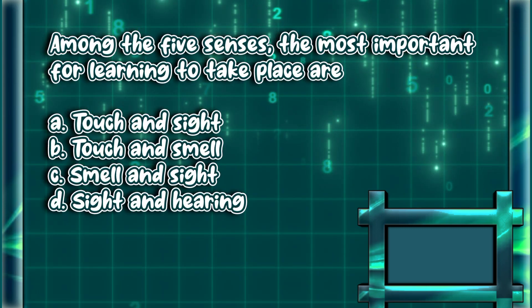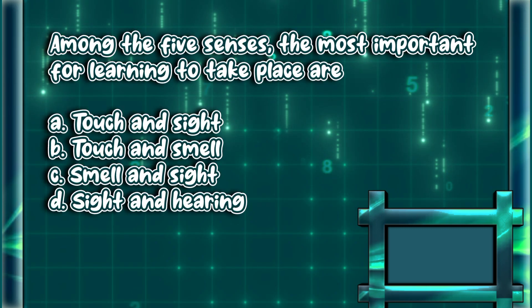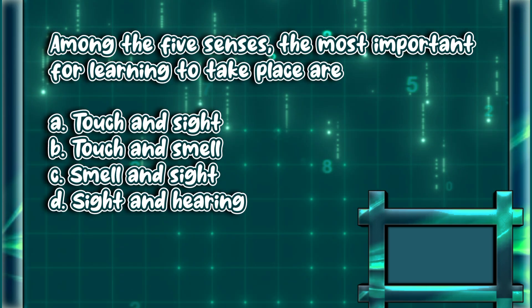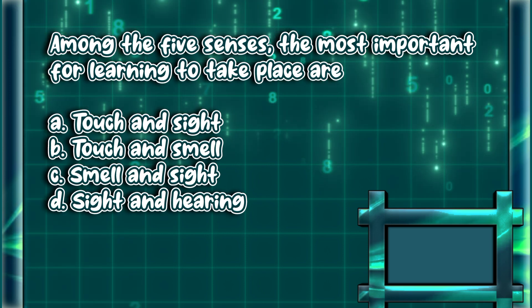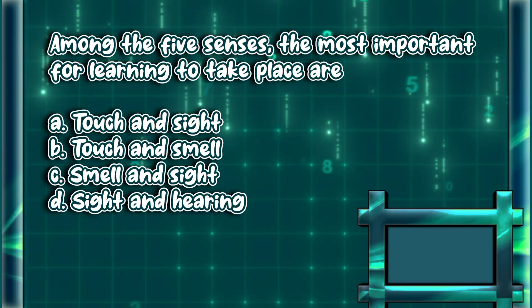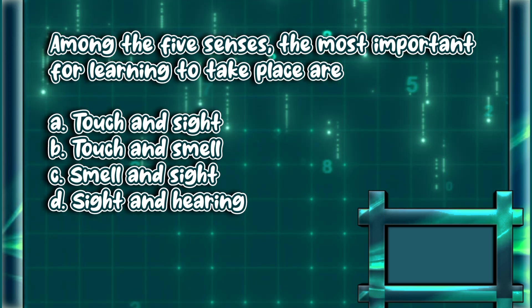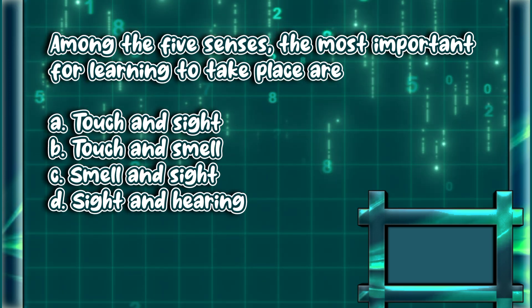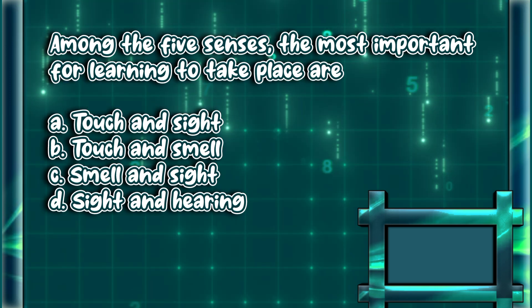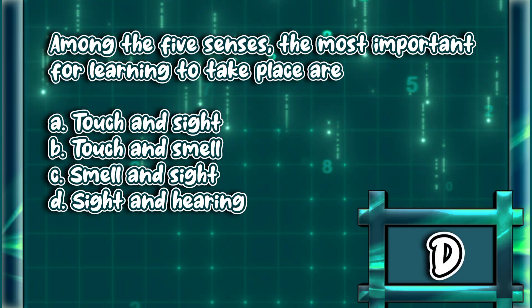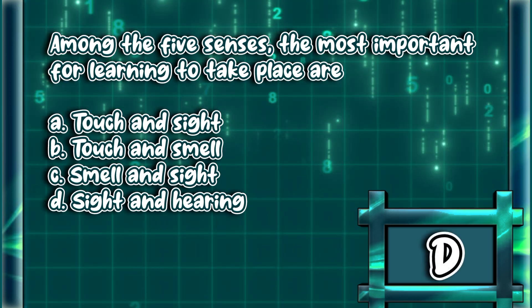Among the five senses, the most important for learning to take place are. A. Touch and sight. B. Touch and smell. C. Smell and sight. D. Sight and hearing. The answer is letter D.